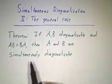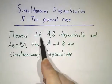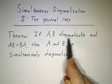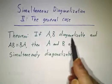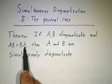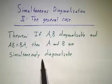Now we're going to tackle the general case. The theorem we're going to prove is that if you have two diagonalizable matrices or two diagonalizable operators and they commute, then they're simultaneously diagonalizable.